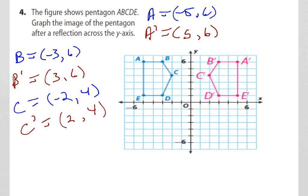And then the last thing we want to do is take a look at D. D is (-3, 1). So our D-prime is going to give us, change the sign, that becomes a positive (3, 1).